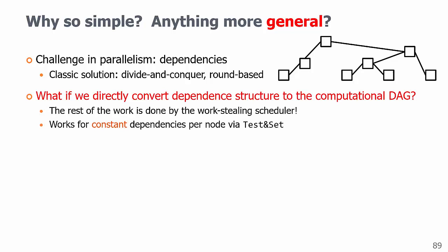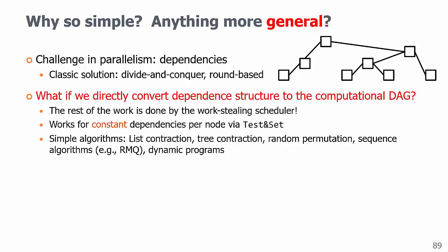It works for any dependent structure that has constant fan-in per node using test and set for join. By doing so, we got super simple algorithms for a long list of problems, and in many cases, they incur no overheads such as synchronization and packing the leftover elements. And we can even get worst-case bounds on randomized algorithms.